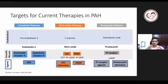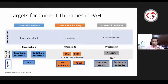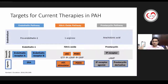Soluble guanylate cyclase (sGC) stimulators are one of the latest innovations in PAH therapy — riociguat is an important example. Older molecules include phosphodiesterase-5 inhibitors: sildenafil and the longer-acting tadalafil with fewer side effects. The prostacyclin pathway is mostly reserved for advanced disease. Initially all molecules were parenteral, but recent developments include subcutaneous, inhalational, and oral forms, including the IP receptor agonist selexipag, which has significantly changed the therapeutic armamentarium.